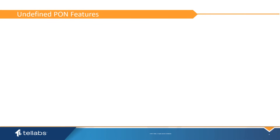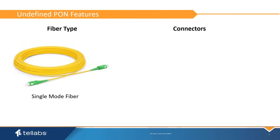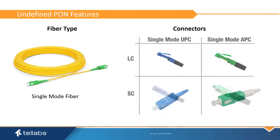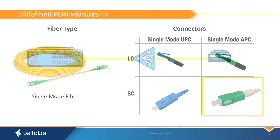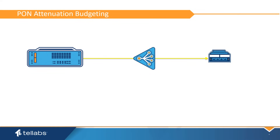Though implementations of GPON and XGS PON share many common features, many features are left undefined — specifically the exact kind of fiber cable and connectors to use. Telabs uses single-mode fiber for the PON infrastructure, providing the best reach and longevity for the network. At the OLT, SC-UPC connectors are used. At the ONT, SC-APC connectors are used. These connector types are common, reliable, and cost-effective.